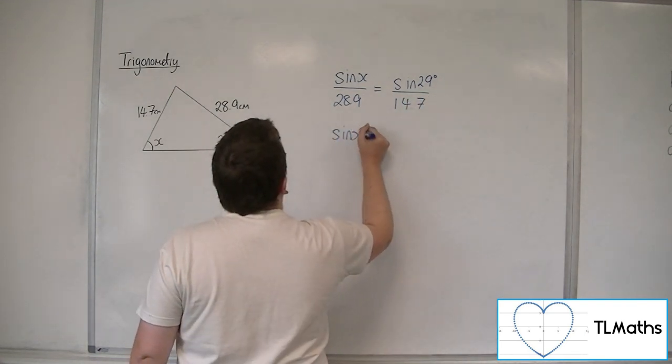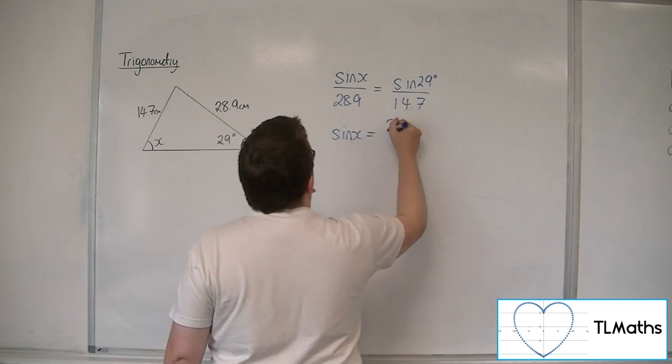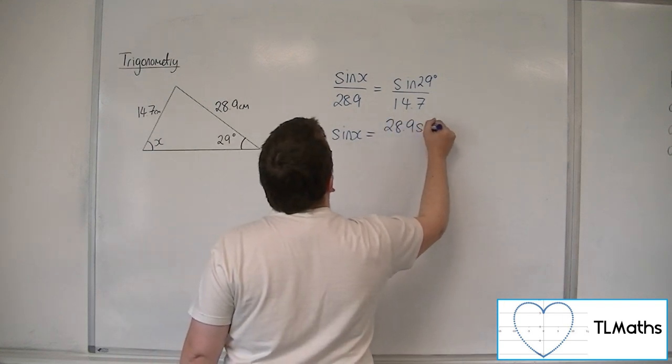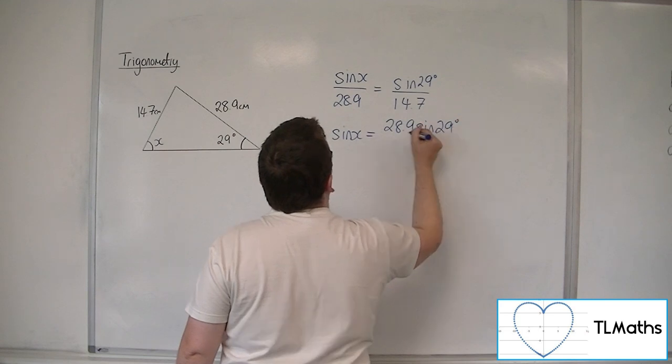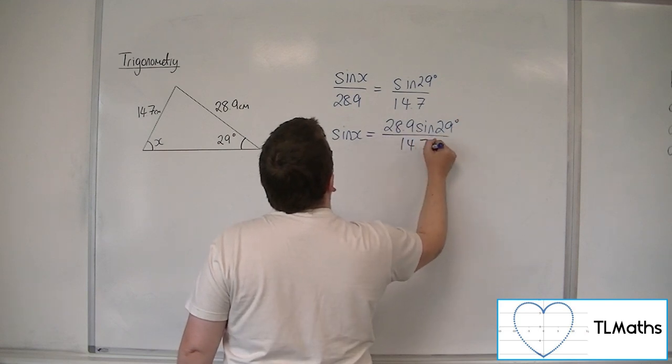So then rearranging that, you can say that sine x is 28.9 sine of 29 degrees over 14.7.